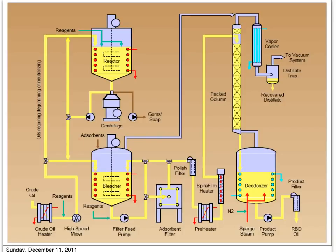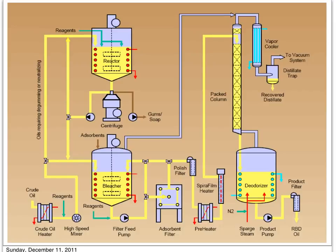The next step in the process is bleaching. The function of bleaching is to remove the colouring compounds and other compounds like ketones, aldehydes, and trace metals. We add an absorbent in the form of bleaching clay or bleaching earth. The process is done under vacuum and at elevated temperature to reduce the colour of the crude oil. After bleaching, the oil is pumped through a series of filters to separate the oil from the absorbent material, with polishing steps to ensure the spent bleaching earth particles are removed completely.